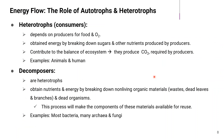Heterotrophs are consumers which depend on producers for food and oxygen. They obtain energy by breaking down sugars and other nutrients produced by producers, and contribute to the balance of the ecosystem. They produce carbon dioxide, which is required by producers for photosynthesis. Examples of heterotrophs include animals and humans.